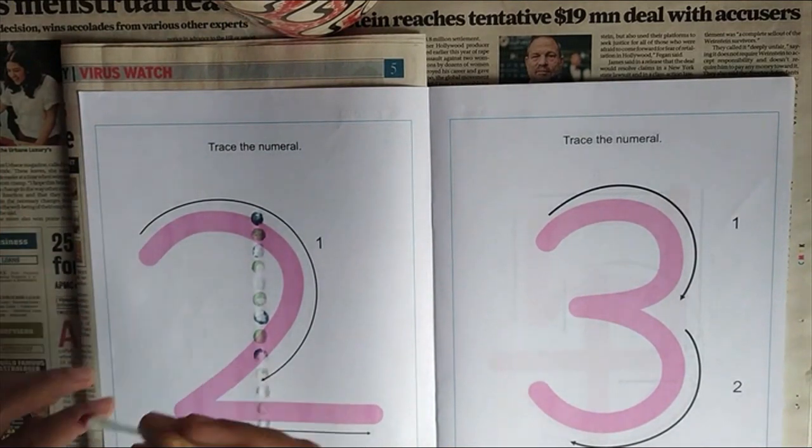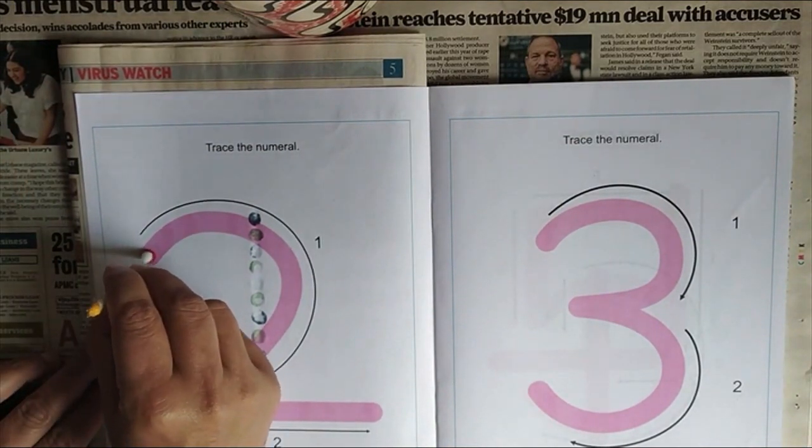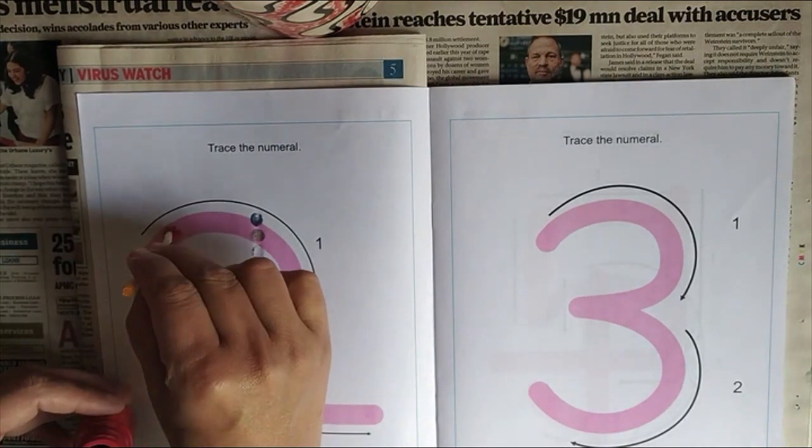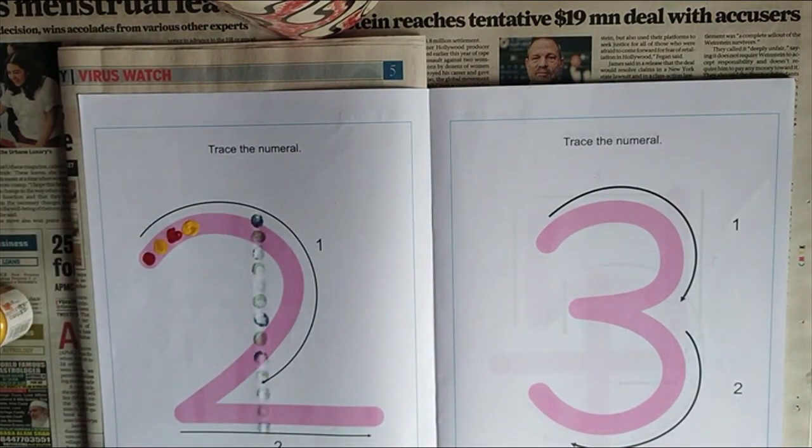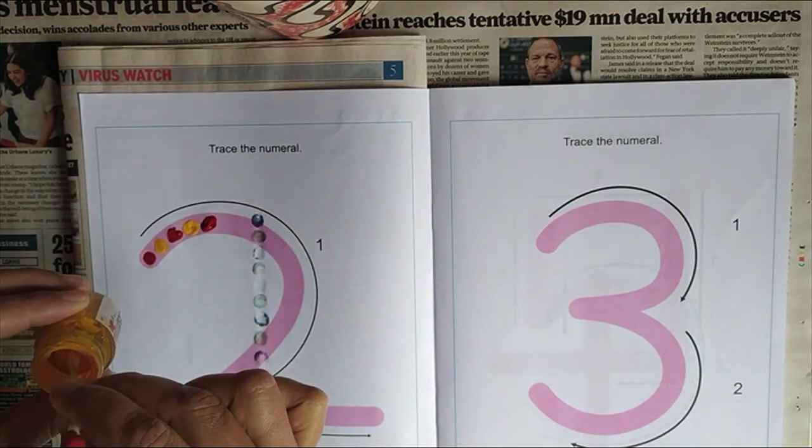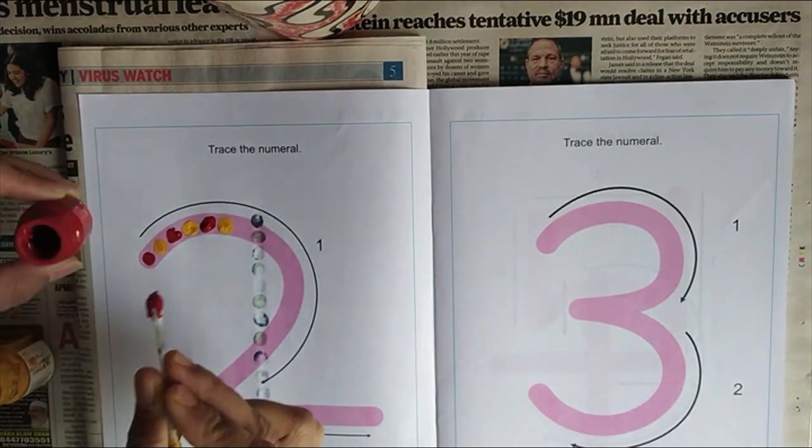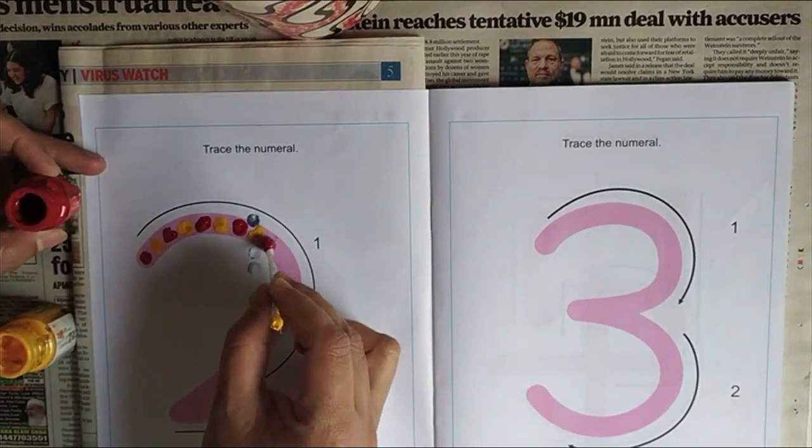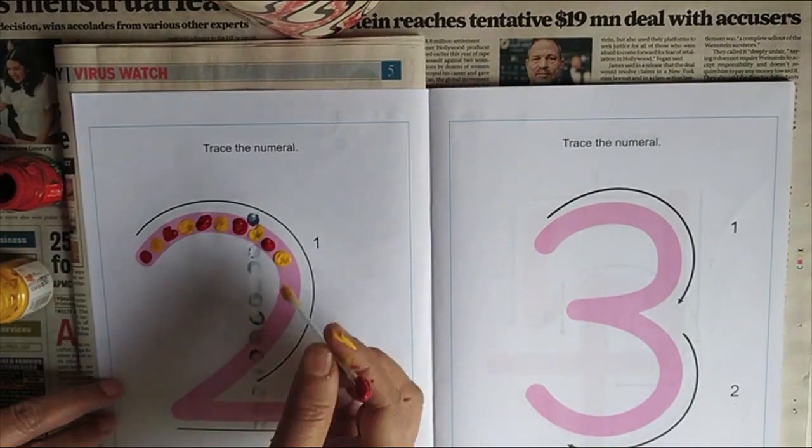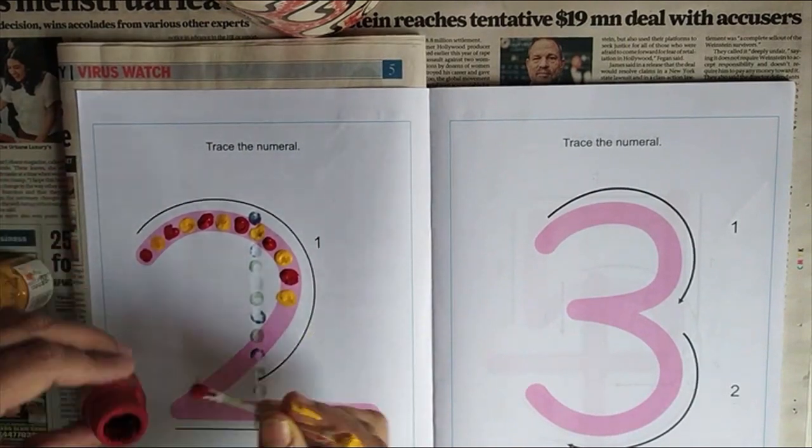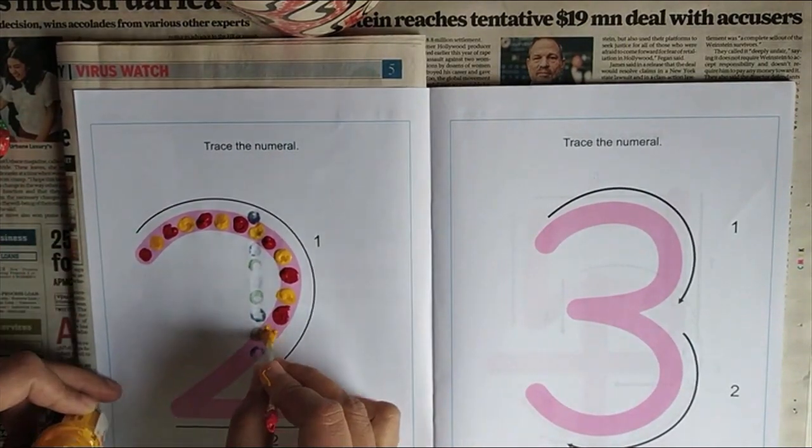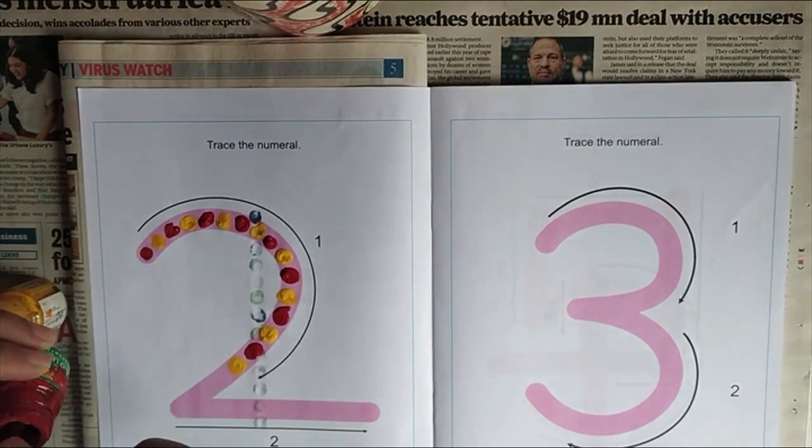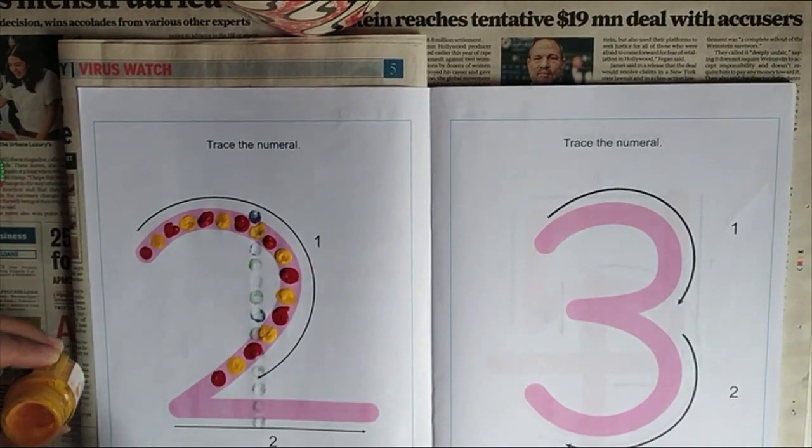Children, now we will move on to the next number, number two. We will be changing the colors, but we will do the same thing with different colors. I have taken red and yellow.